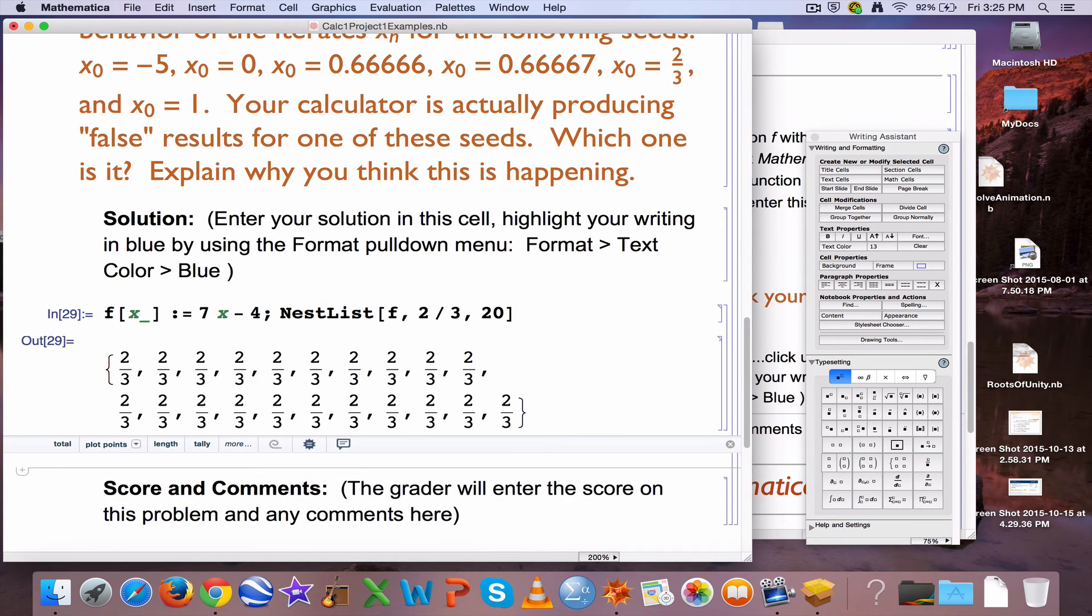Mathematica is giving us exact answers. Probably the reason the calculator, if you have sort of a lower end model at least, is giving you false results is that it's rounding 2 thirds to 0.6666666. A certain number of 6s and a 7 at the end. And because of that, you might be seeing, even when you type in 2 thirds, that the iterates eventually go to plus infinity. Maybe, maybe not.